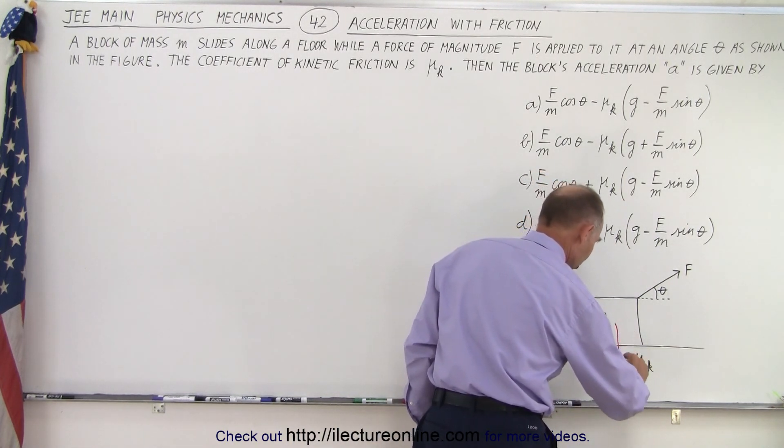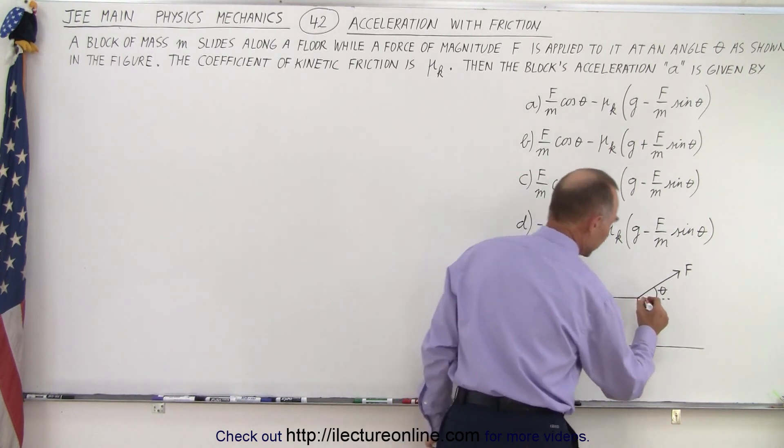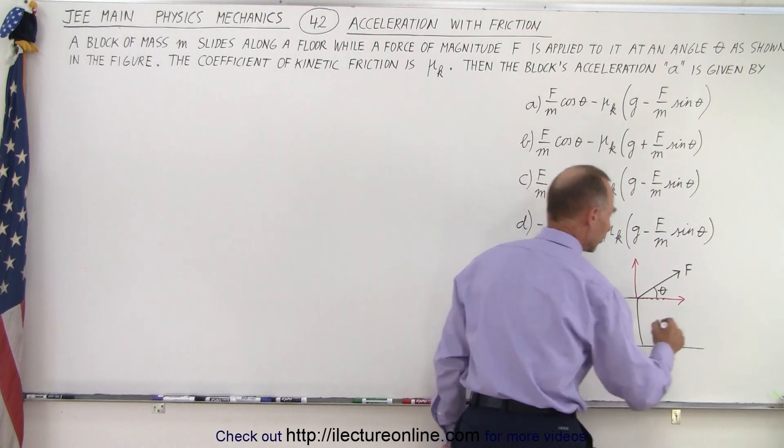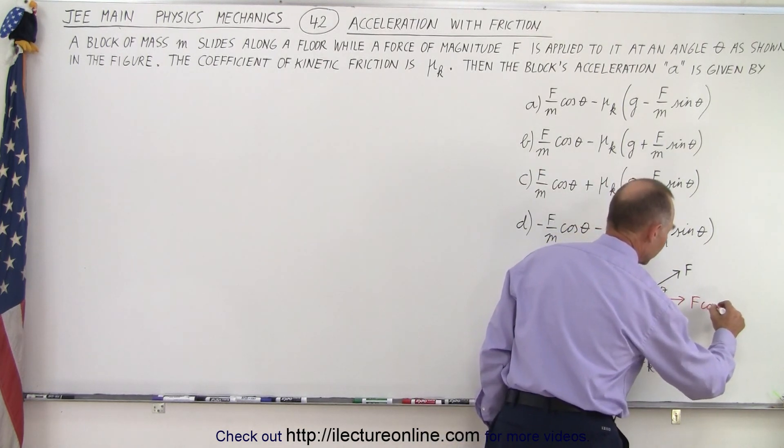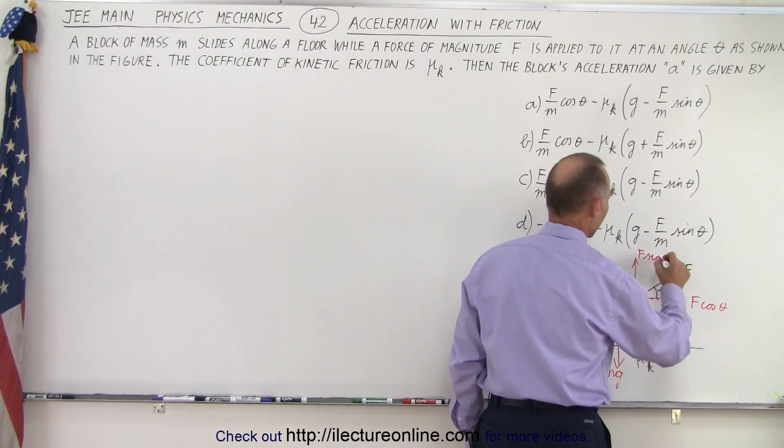So we do have the mg working in this direction. The force can be divided into its two components, the vertical and the horizontal components, so this is F times the cosine of θ and this here is F times the sine of θ.